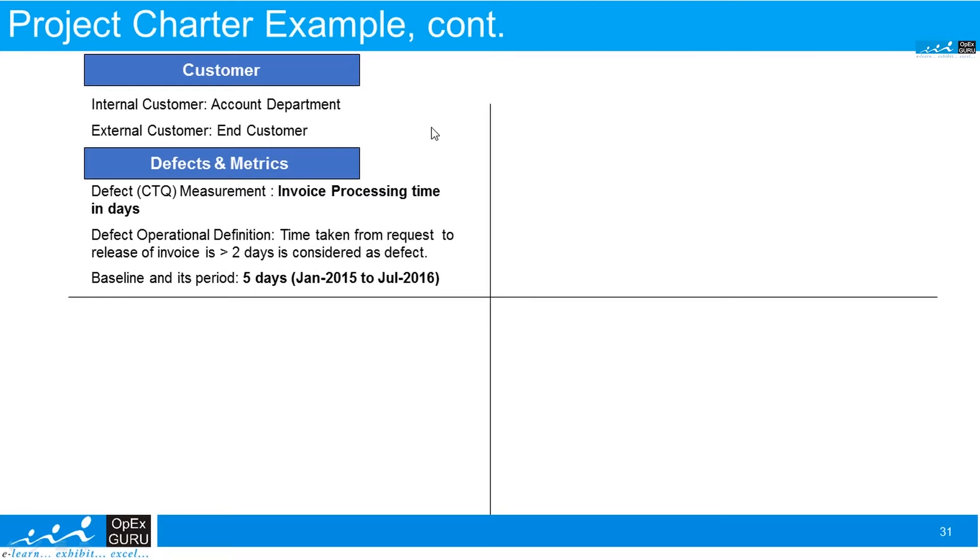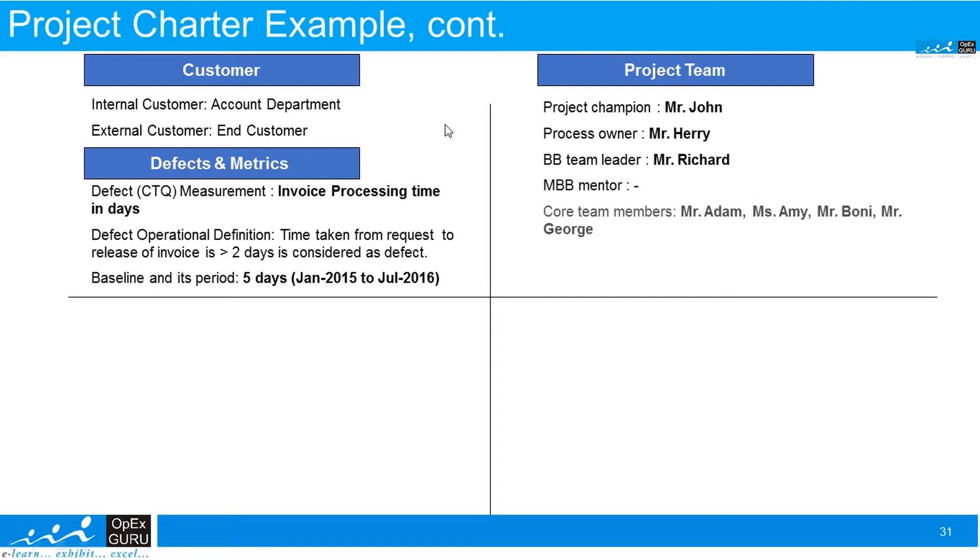Who is the project team working on this particular project? Project champion: Mr. John. Process owner: Mr. Harry. Black belt or team leader: Mr. Richard. Here there is no master black belt. Core team members are Mr. Adam, Miss Amy, Mr. Bonnie, Mr. George. Extended team members, if needed, we will include Mr. Matthew of stores also for this particular project.